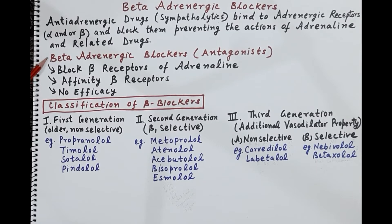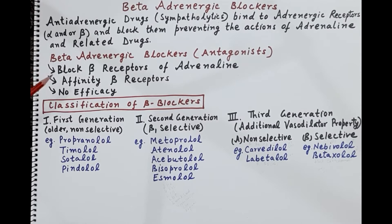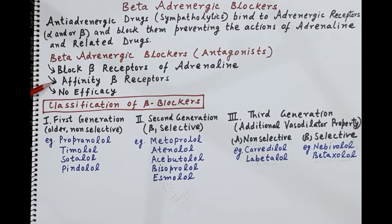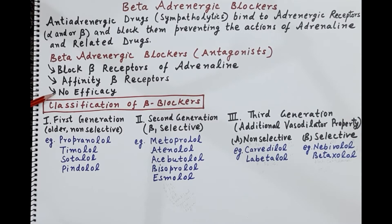Sympatholytics or anti-adrenergic drugs are of two types. If they block the alpha receptors they are called alpha blockers, and if they block the beta receptors they are called beta blockers or beta adrenergic antagonists. Beta adrenergic blockers are those drugs that block beta receptors — they show affinity for beta receptors, that is capability of binding to beta receptors, but no efficacy. Once bound to beta receptors, they block the action of adrenaline and other adrenergic drugs.